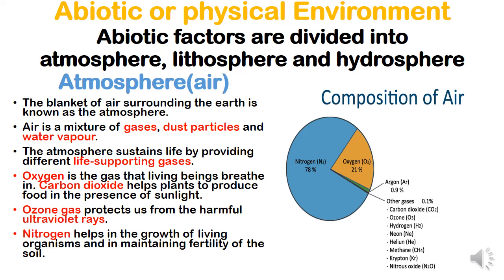Atmosphere is a blanket of air surrounding the earth — a cover around the earth like a blanket. Air is a mixture of gases, dust particles, and water vapors. On the right-hand side you can see a diagram showing the percentage of different gases available on earth. Because of this balanced percentage, life is possible on earth.